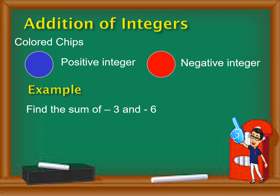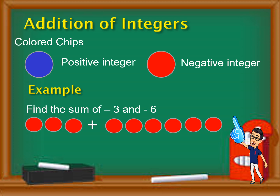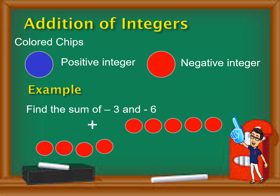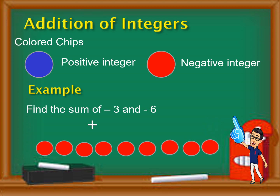Let's have this example: find the sum of negative three and negative six. Since both are negative, we use red chips. We have three red chips for negative three, plus six red chips for negative six. There are no zero pairs possible since all chips are the same color. So we just count: one, two, three, four, five, six, seven, eight, nine — that is negative nine. Therefore, negative three plus negative six is equal to negative nine.